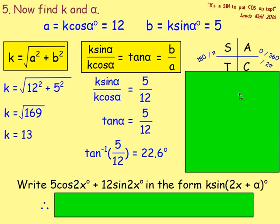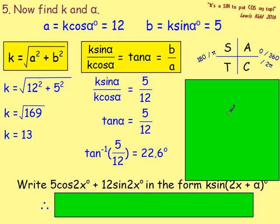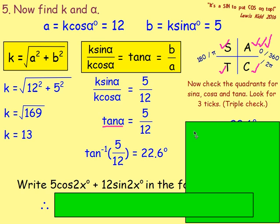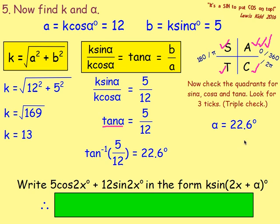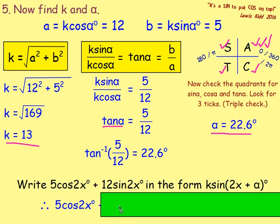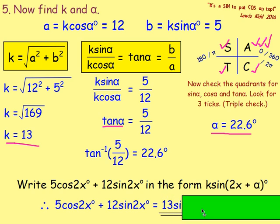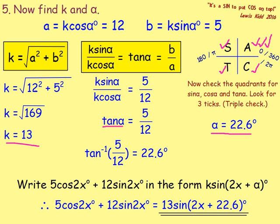Remember, you always need to check your quadrants — think about CAST and whether sine, cos, and tan are positive or negative. Cosα is positive, sinα is positive, and tanα is positive (5/12 is positive), so tan is positive in T and A. You want the quadrant with three ticks, which is just your calculator answer. So alpha is 22.6 degrees. We've found k and alpha, so 5cos2x plus 12sin2x equals 13·sin(2x + 22.6°). So Ms. Amel, not much of a difference — you do it the exact same way.